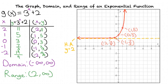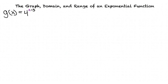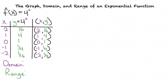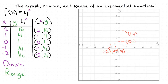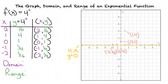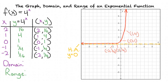Let's do an example of a horizontal translation: g of x equals 4 to the power x minus 3. We first find the graph of f of x equals 4 to the power x by finding our 5 points and plotting them. As the x values get smaller, the y values get closer to 0 but do not reach 0, giving us a horizontal asymptote at y equals 0. The graph of 4 to the power x has a domain of negative infinity to infinity and a range of 0 to infinity, not including 0.